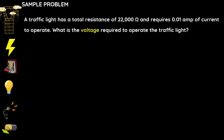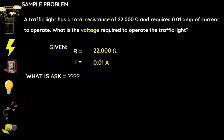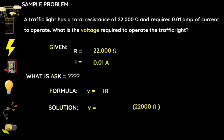Another problem for voltage: a traffic light has a total resistance of 22,000 ohms and requires 0.01 amperes of current to operate. What is the voltage required? Given: resistance = 22,000 ohms, current = 0.01 amperes. Formula: voltage equals current multiplied by resistance. Solution: 0.01 × 22,000 = 220 volts.